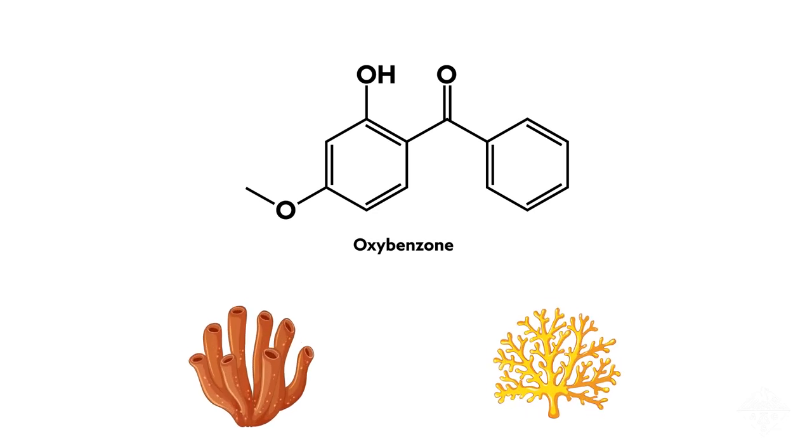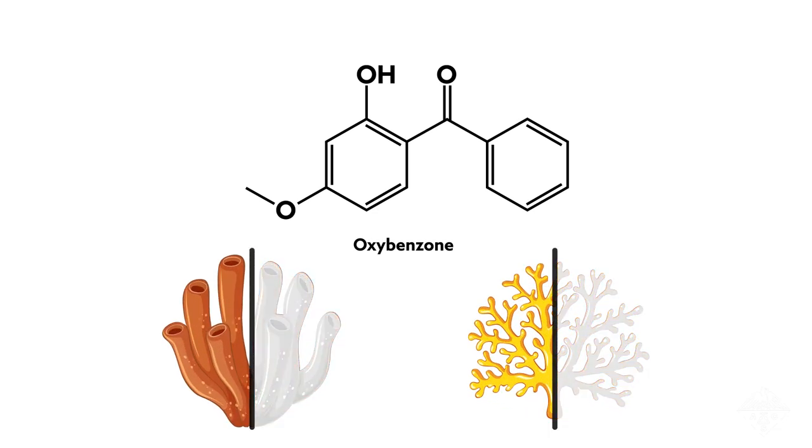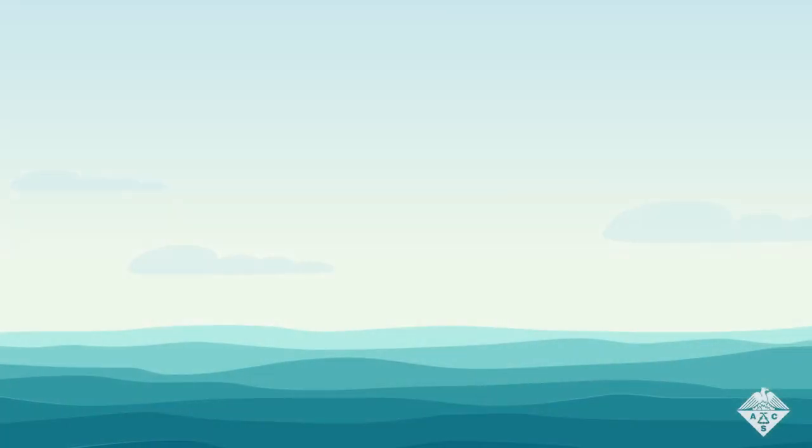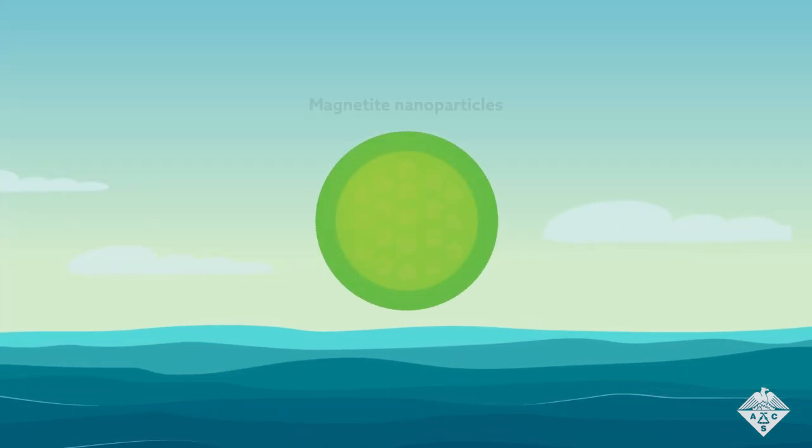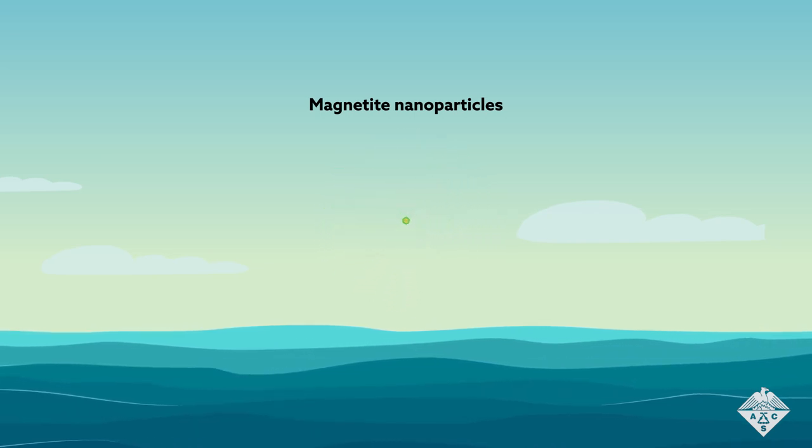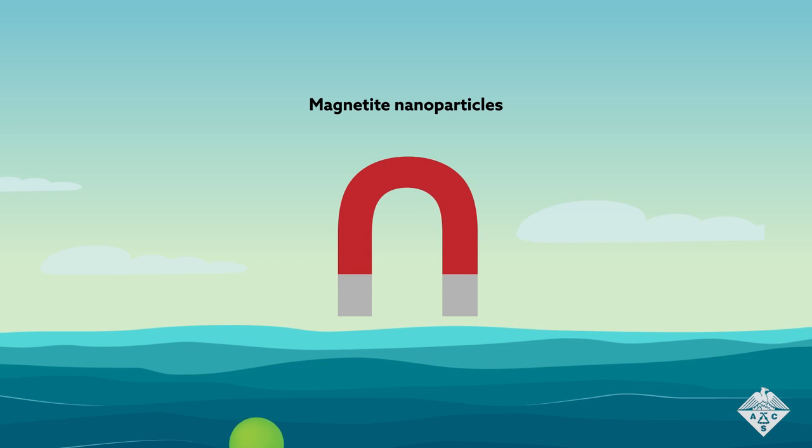Oxybenzone is a common sunscreen ingredient that can cause coral bleaching. Felix Roman and his team from the University of Puerto Rico hope to remove the chemical from seawater using magnetite nanoparticles that are inside an environmentally friendly and cheap matrix. The particles can then be pulled out of the water using a magnet.